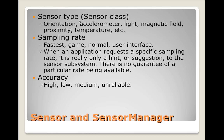The sensor class types include orientation, accelerometer, light, magnetic field, proximity, temperature, and other sensor types. There's also a sampling rate: fast, game, normal, fastest, user interface. When an application requests a specific sampling rate, it's really only a hint or suggestion to the sensor subsystem — there's no guarantee you'll get that particular rate or whether it's going to be available. There's also an accuracy rating you can set: low, high, medium, or unreliable, basically to make the user interface work correctly. For example, if you're doing a GPS thing and it was following you on a map while walking, you probably don't want it too accurate because it's going to take too long to update. If you set it as unreliable, medium, or low, the refresh rate won't be as fast but it's more usable in terms of application design.